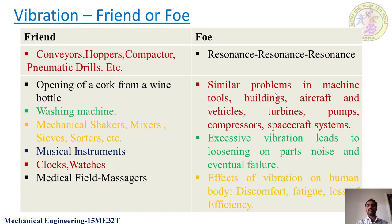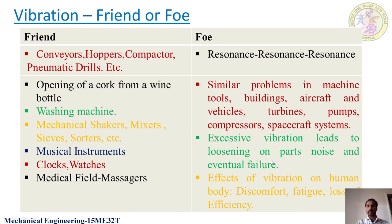Similarly, in machine tools, buildings, aircraft, vehicles, turbines, and compressors we do not want vibrations. If machine tools vibrate, there exists less accuracy and wear and tear in the parts. If buildings vibrate, cracks appear and this leads to a reduction in the life of the building. Similarly for aircraft or vehicles, vibration is undesirable. Excessive vibrations in the machine tool lead to loosening of parts.